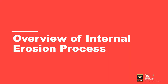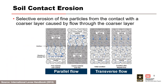Soil contact erosion is the selective erosion of fine particles from the contact with a coarse layer caused by flow through the coarser layer. For flow parallel to the interface, the particles from the fine layer are eroded and transported through the pores of the coarse material. Flow transverse to the interface is commonly referred to as filter incompatibility. USACE added the word 'soil' in front of Eichold's term 'contact erosion' to emphasize that this process occurs at the fine-coarse soil contact and not the soil-rock contact.